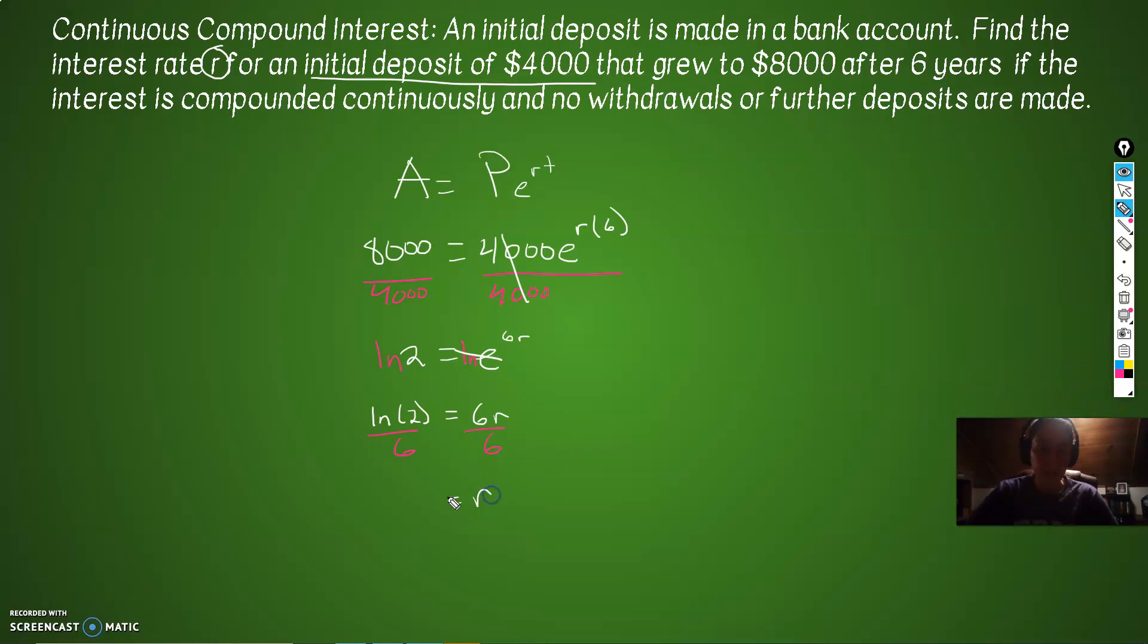So our rate is going to be whatever the LN of 2 divided by 6 is, which is 0.1155. So we usually want this as a percent. So we'll call this 0.12 is R. So the interest rate, though, because remember, we need to plug this back into what it is that we're trying to figure out. So find the interest rate. So 0.12 equals R.